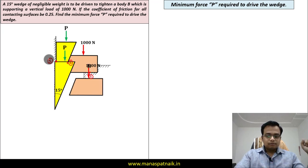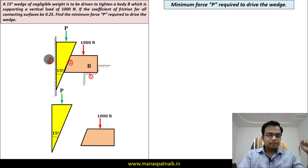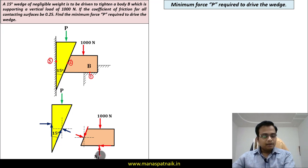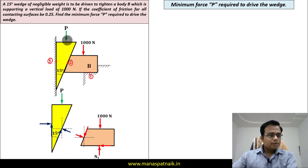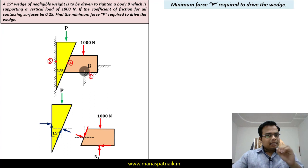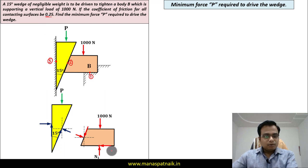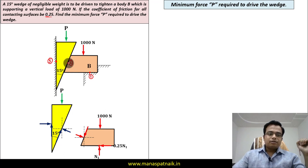Now we need to make the free body diagram of both blocks — the wedge as well as the 1000 Newton block. At point one, there is going to be a normal N1. Since the wedge is driven downward, this block has a tendency to move slightly towards the right, so friction acts slightly towards the left — that is μN1, where μ is 0.25 for all contacting surfaces.